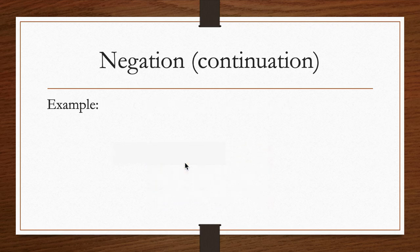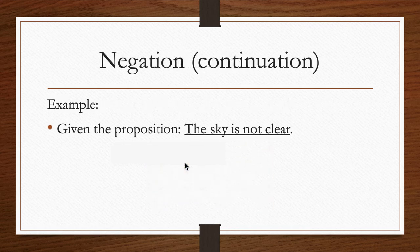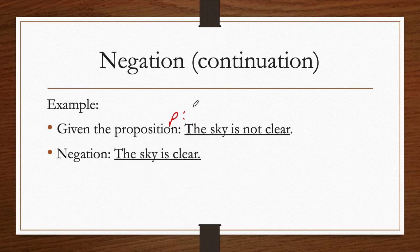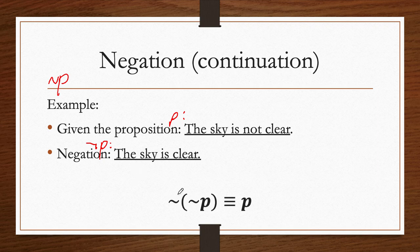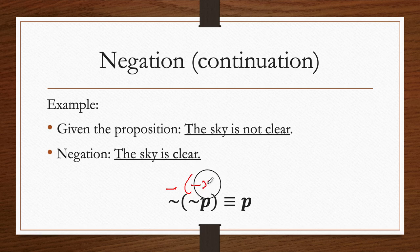Let's have an example. Given the proposition 'the sky is not clear,' we let that as P. So what is the negation? The negation is 'the sky is clear,' which is our not P. Just take note, the double negation still follows here — not not P is equivalent to P. Just like in algebra, minus minus X equals X. In logic, we also have this double negation, and it is equivalent to P.